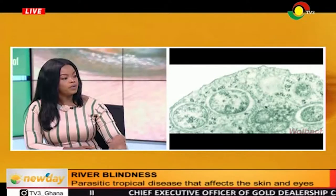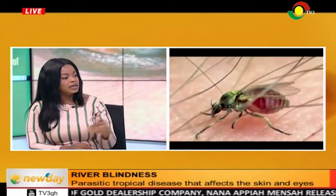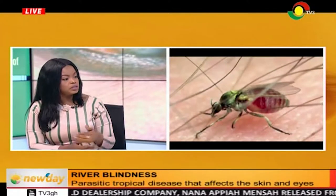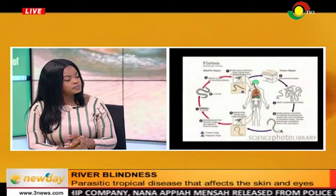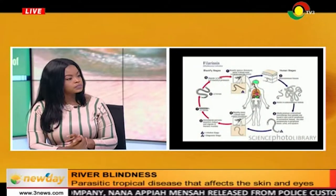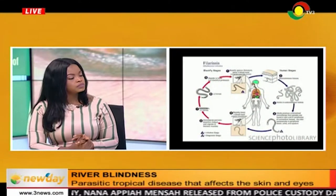Before we move on to the program, let's talk about elephantiasis, as it is also part of the neglected tropical diseases. Elephantiasis is caused by a worm called Wuchereria bancrofti — a very tiny microfilarial worm that you cannot see with the naked eye.